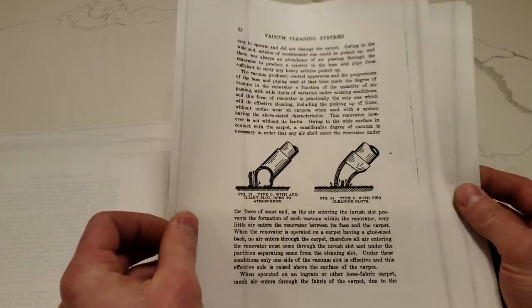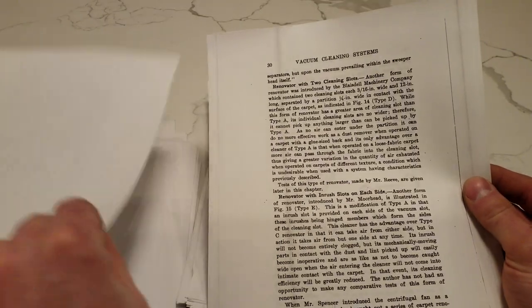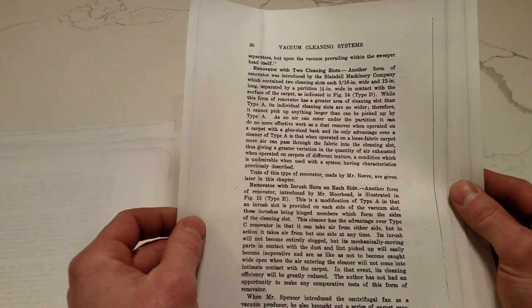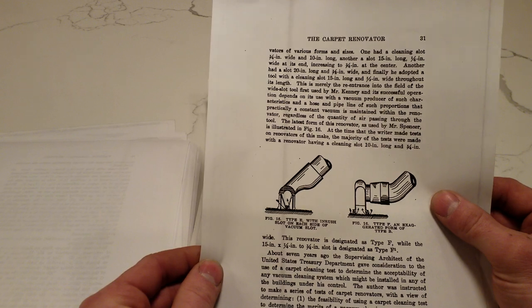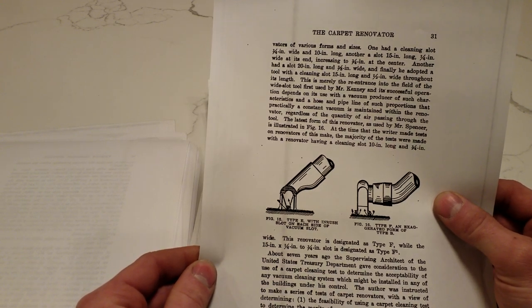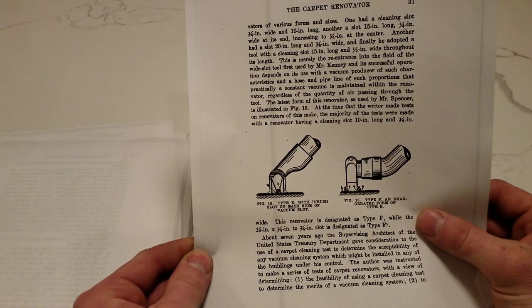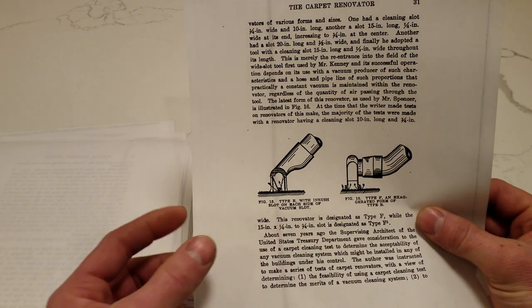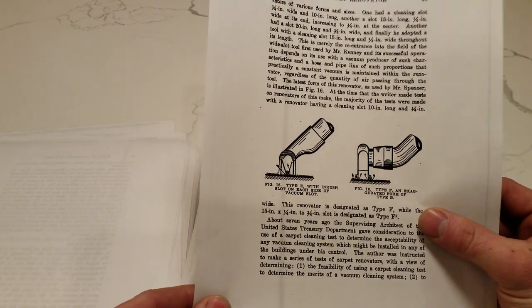Type D with two cleaning slots. Type F, and that was the Spencer carpet tool. Cleaning slot 10 inches long and 3 quarters of an inch wide. Spencer also made an extra wide one, 1 quarter inch to 3 quarter inch slot. So it would start out at 3 quarter and go down to 1 quarter inch at the ends. That's type F1.